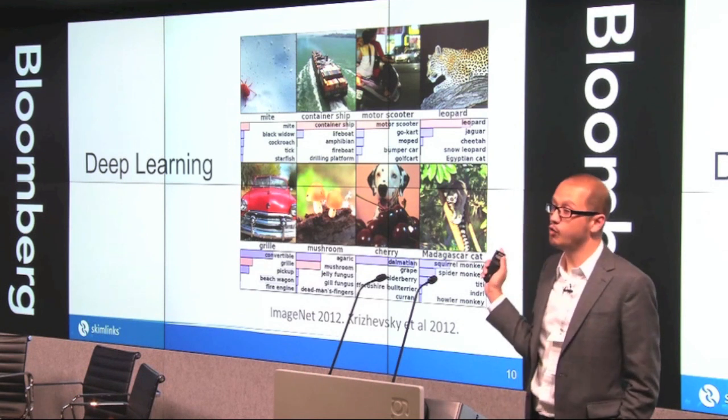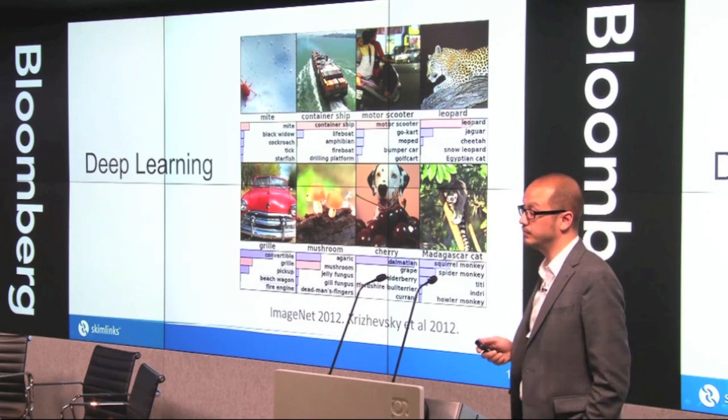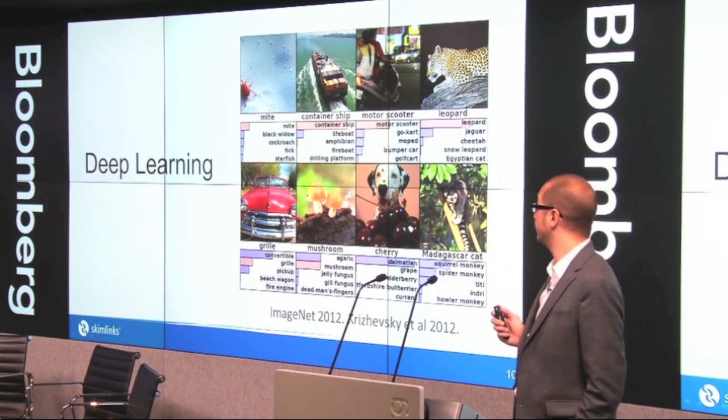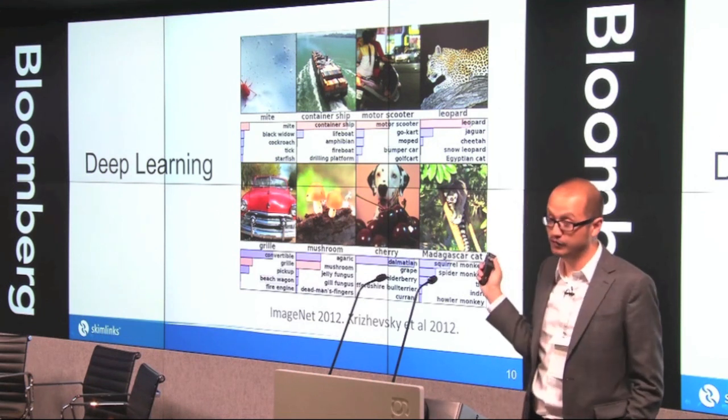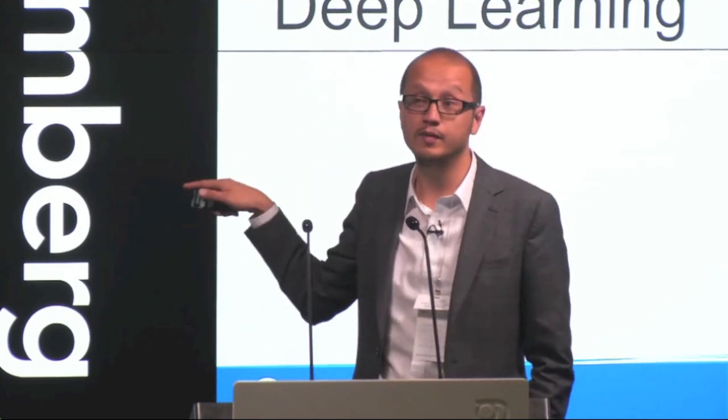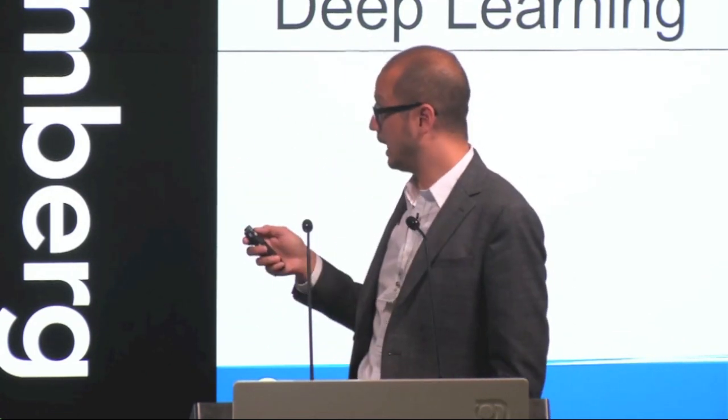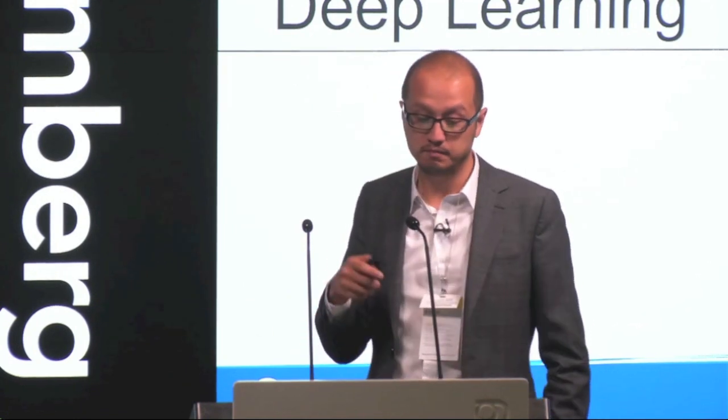In every subsequent year since then, deep learning has almost halved the error rates again. Deep learning is simply neural networks with a deep architecture — that is, many hidden layers. Neural networks traditionally have been limited to a small number of hidden layers, and deep learning just says let's have lots of deep layers. It could be 10 or 20 layers rather than one or two.